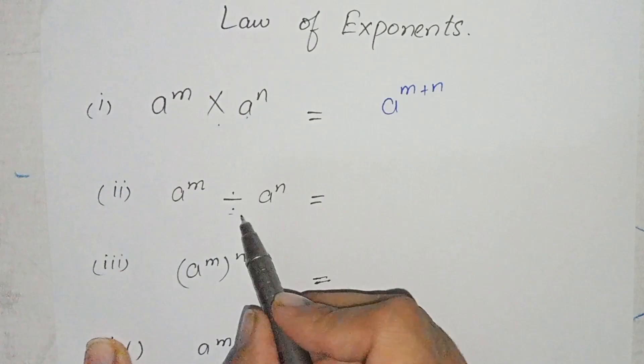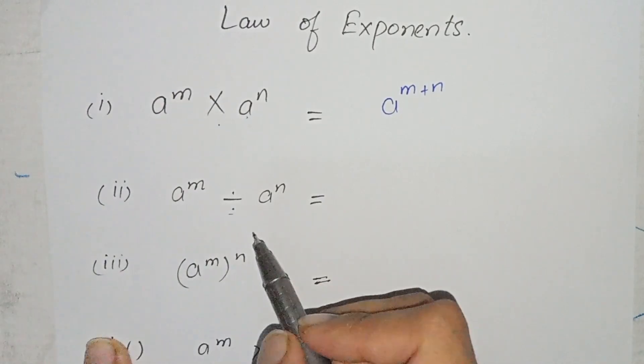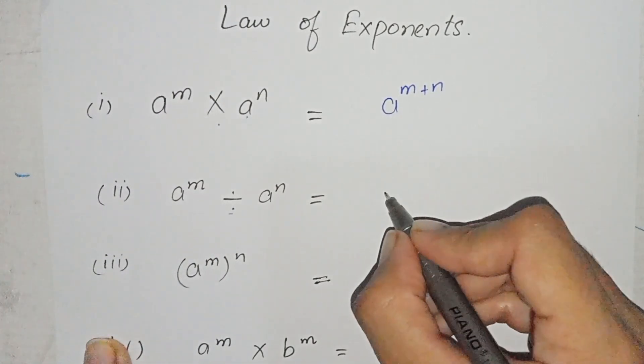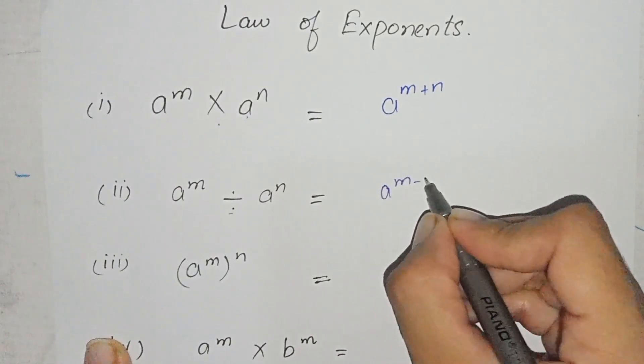When we multiply, and when we divide, if the bases are same, then we subtract the powers. This is the power, which we call exponents, which we subtract.